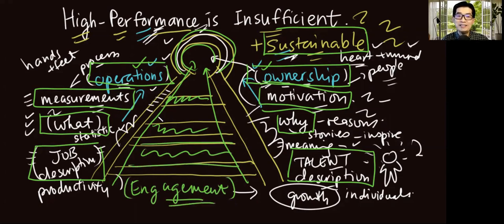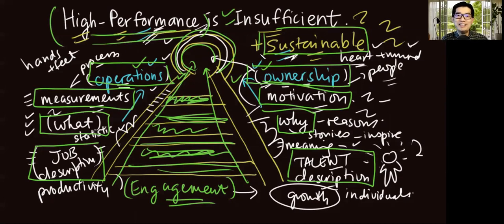Engagement is the crucial linking factor between operations and ownership. And when both of them are working in tandem with each other, you will indeed have high performance that is not only realistic, but you have a high performance that is sustainable in the long run. And this is the type of results that we should all aim towards.